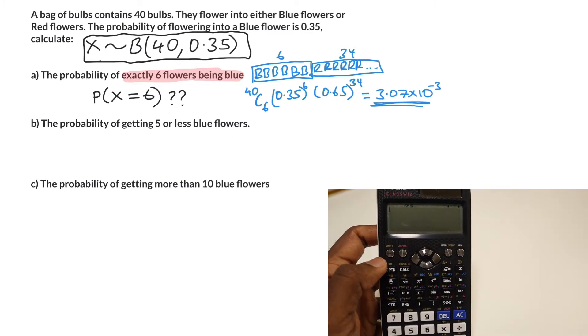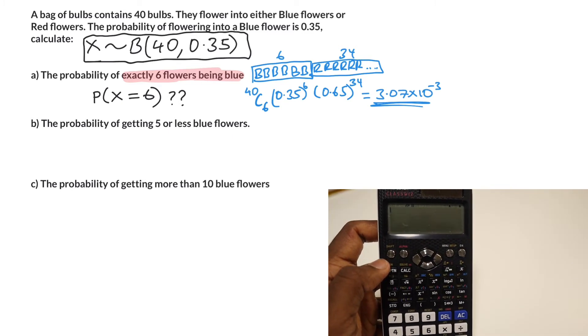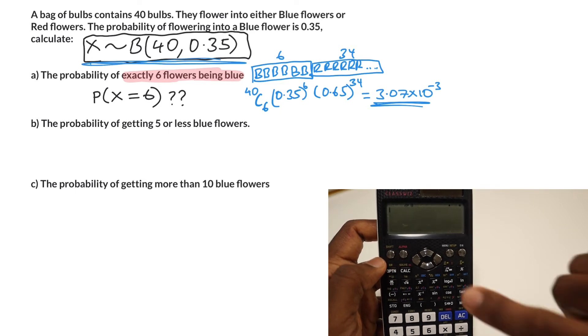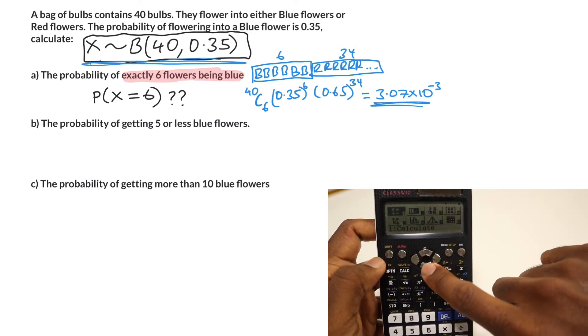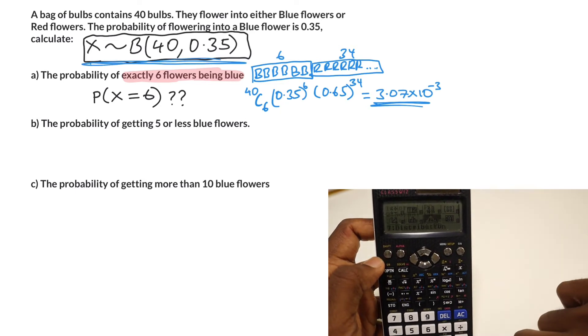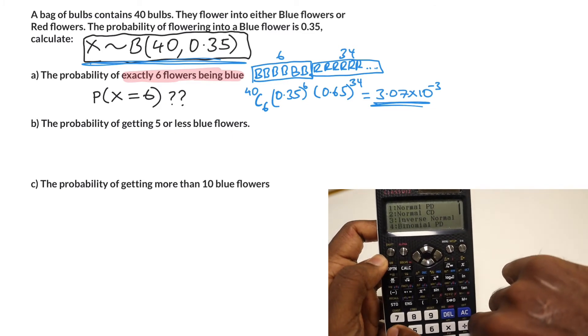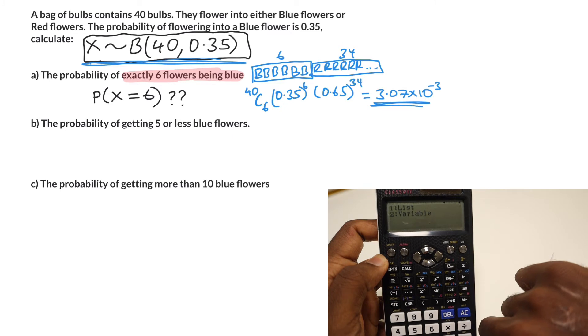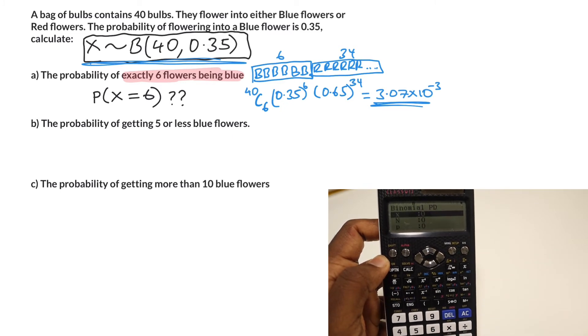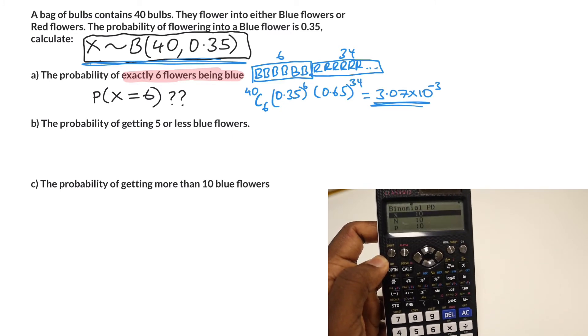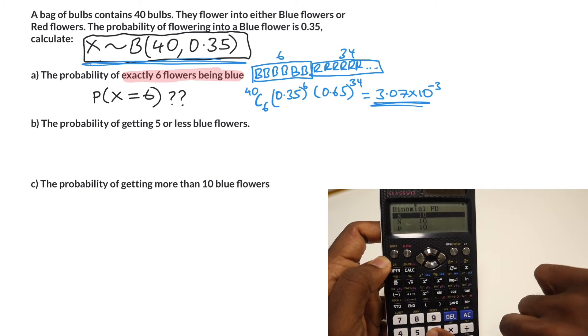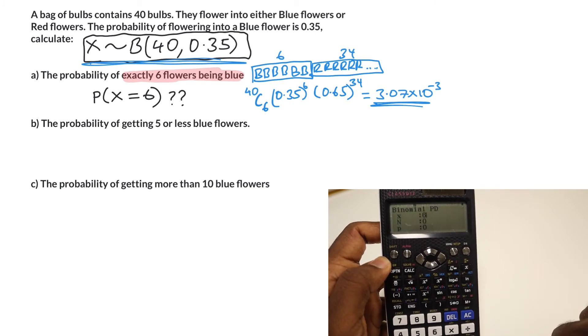The other way would be quite simply to create a distribution. Hit the menu button, go to your distributions, and what we need is the binomial PD. That's option number four. Hit that and I'm going to go for variable. What we need to do is enter in x, which is what we're looking for. We're looking for the probability that six are blue, so I'll put six in there.